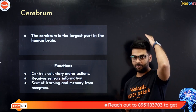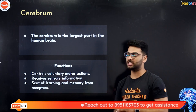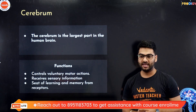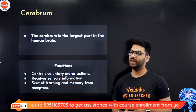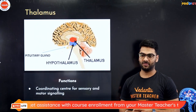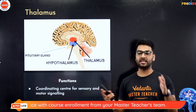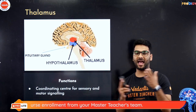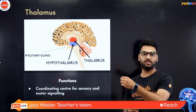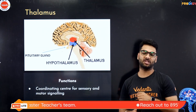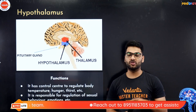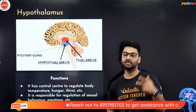The cerebrum is the upper, overall outer largest part of the brain. It controls all voluntary motor actions, receives sensory information, and is also the seat of learning and memory. The thalamus is the control center between sensory and motor signaling. The hypothalamus controls temperature, hunger, thirst, and more.